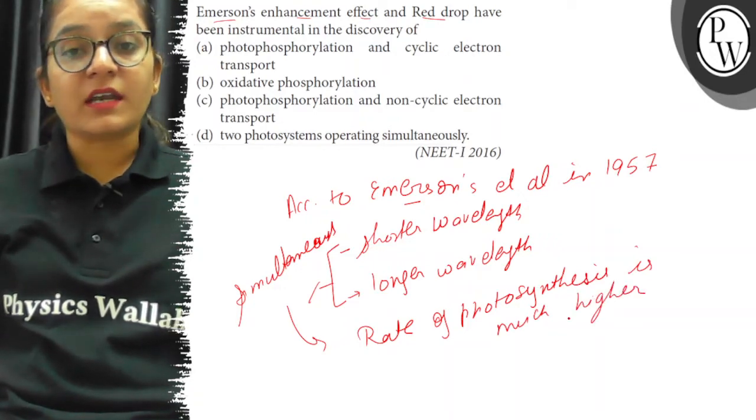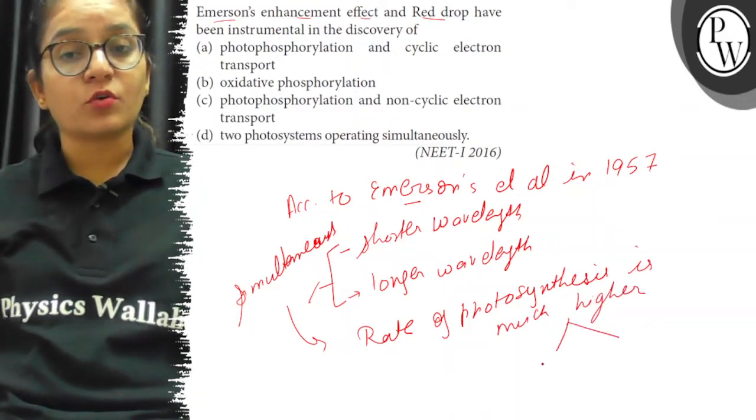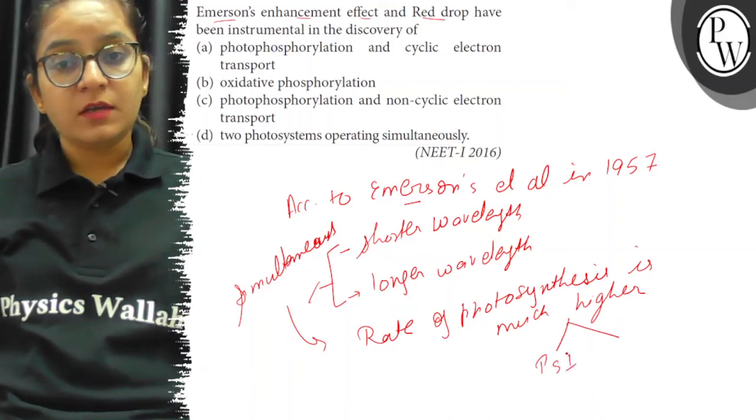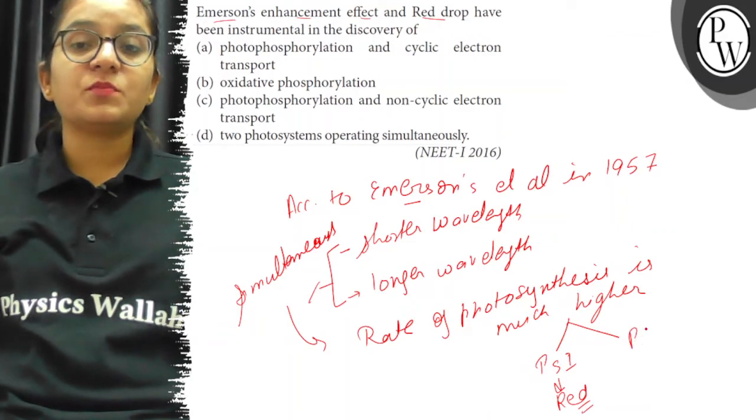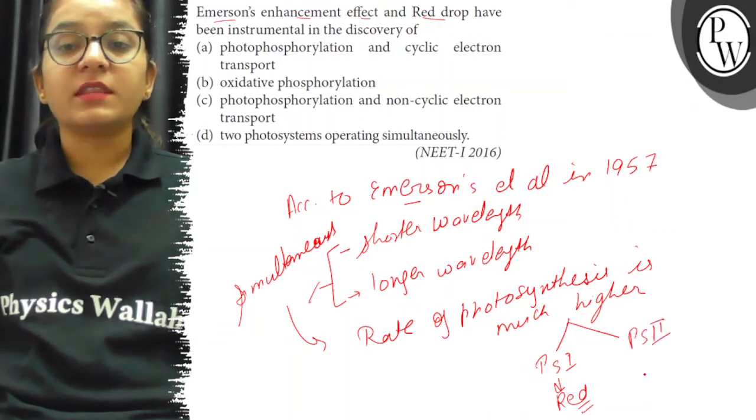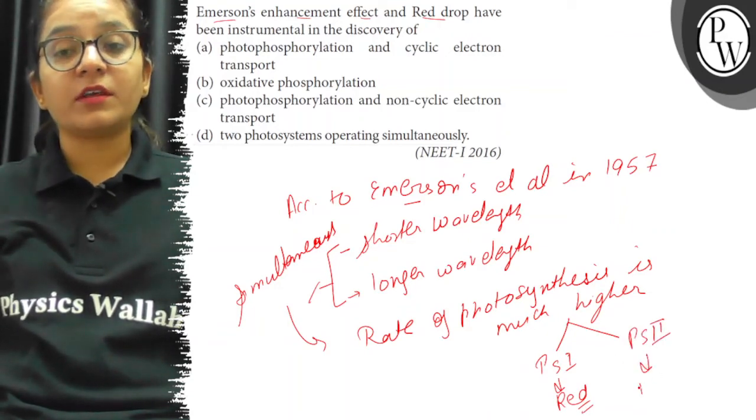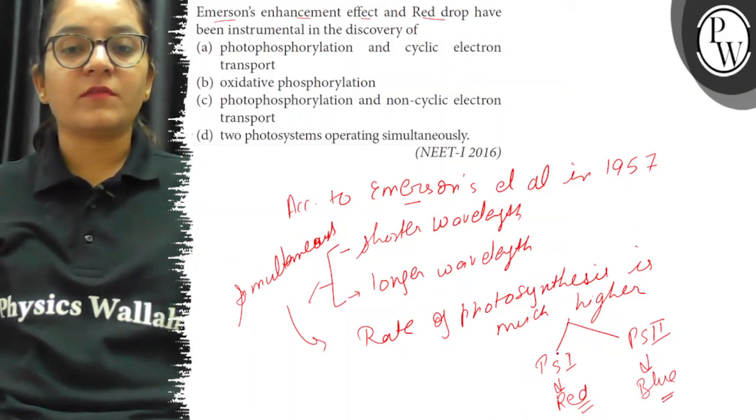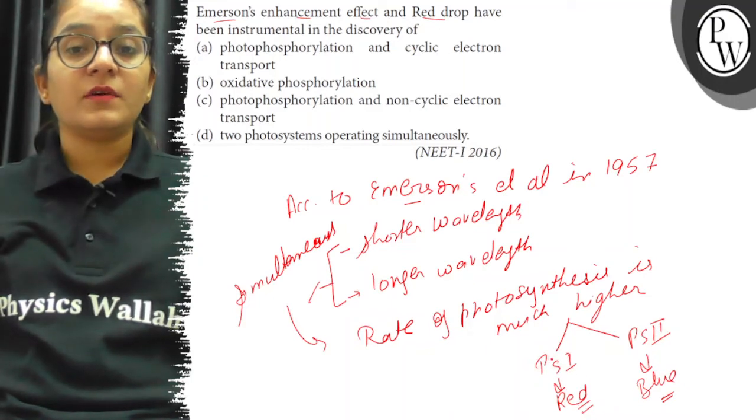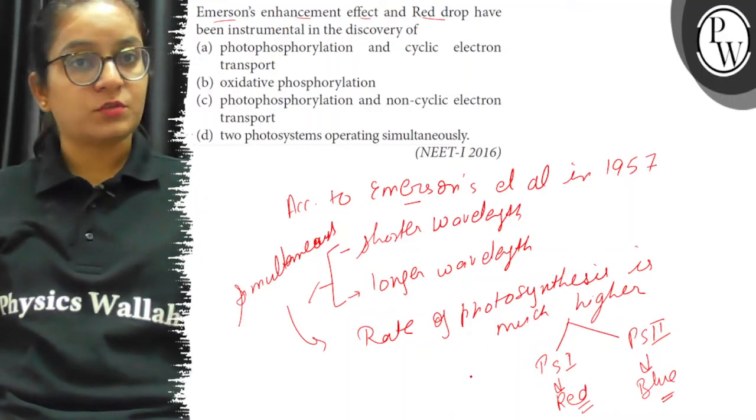Emerson concluded that there must be two different photosystems. Photosystem 1 that absorbs the higher wavelength of light, that is the red wavelength of light, and another is photosystem 2 that absorbs the shorter wavelength of light, that is blue. And when both of them absorb different wavelengths of light together, they give the high rate of photosynthesis.